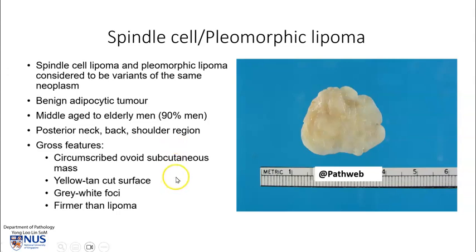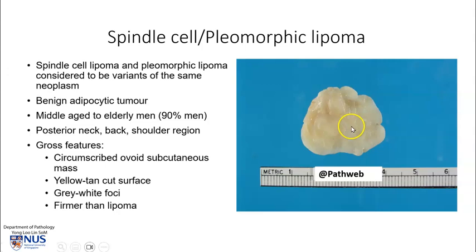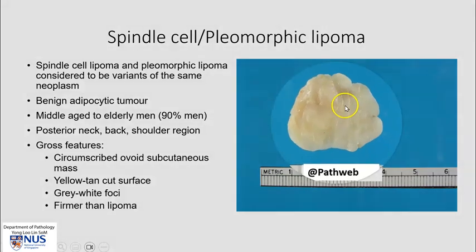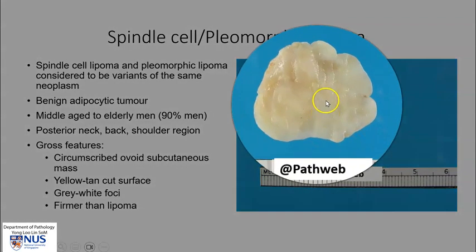Grossly, these tumours are also circumscribed. They are in the subcutaneous plane, and they have a yellow, tan cut surface. They tend to be firmer than a regular lipoma, and you can see here that there are some whitish areas.